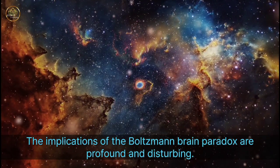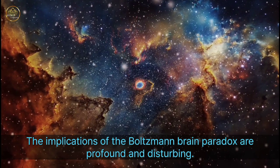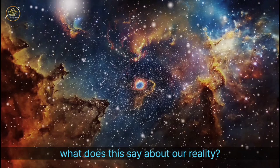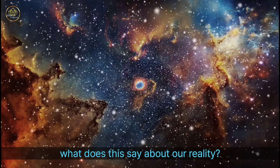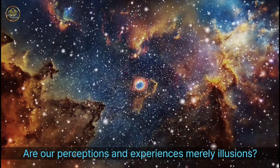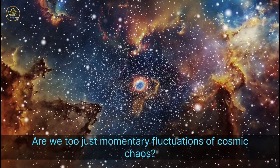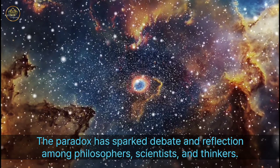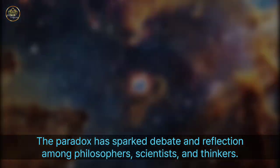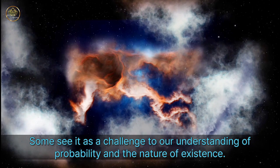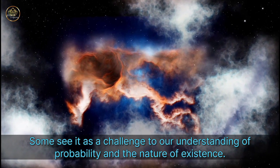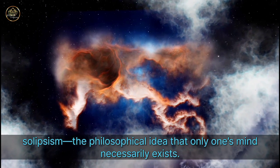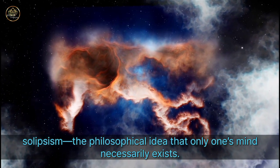The implications of the Boltzmann brain paradox are profound and disturbing. If the existence of such a brain is more likely than the existence of our universe, what does this say about our reality? Are our perceptions and experiences merely illusions? Are we too just momentary fluctuations of cosmic chaos? The paradox sparks debate and reflection among philosophers, scientists, and thinkers. Some see it as a challenge to our understanding of probability and the nature of existence. Others see it as a metaphorical exploration of solipsism, the philosophical idea that only one's mind necessarily exists.